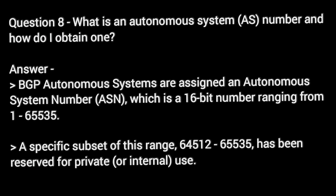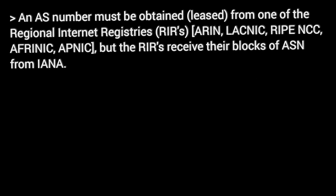Question 8: What is an autonomous system, AS number, and how do I obtain one? Answer. BGP autonomous systems are assigned an autonomous system number, ASN, which is a 16-bit number ranging from 1 to 65,535. A specific subset of this range, 64,512 to 65,535, has been reserved for private or internal use. An AS number must be obtained or leased from one of the regional internet registries: RIRs — ARIN, LACNIC, RIPE NCC, AFRINIC, APNIC — but the RIRs received their blocks of ASN from IANA.